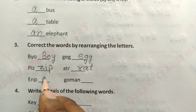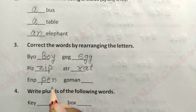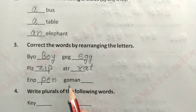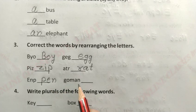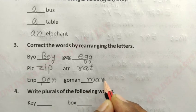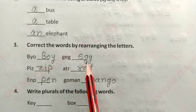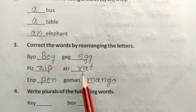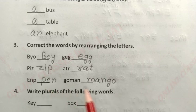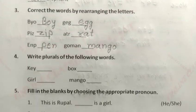E-N-P लिखा हुआ है, इसे सही करने पर बनेगा P-E-N = Pen. G-O-M-N लिखा हुआ है, इसे सही करने पर बनेगा M-A-N-G-O = Mango. तो answers हैं: Boy, Egg, Zip, Rat, Pen, Mango.